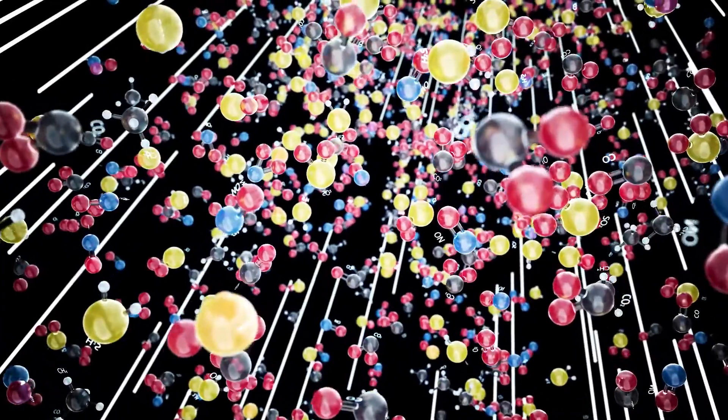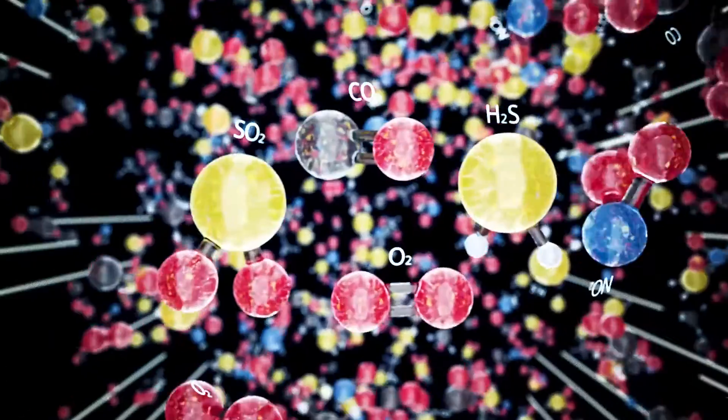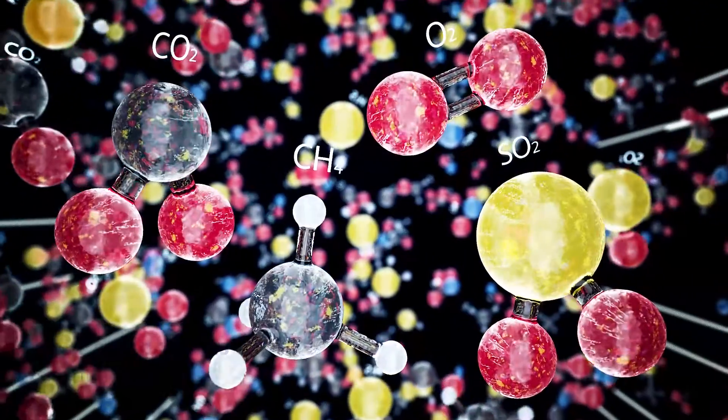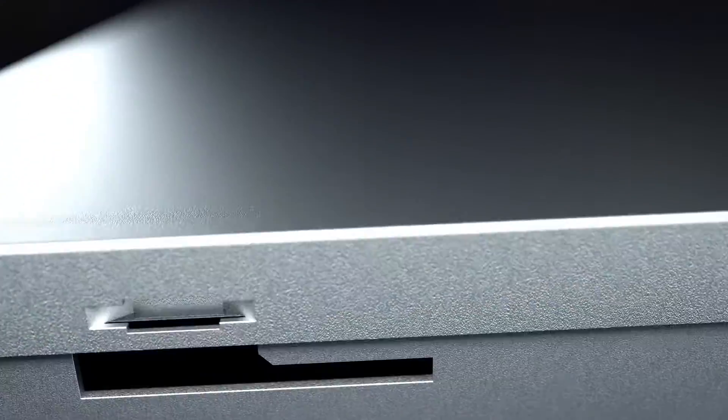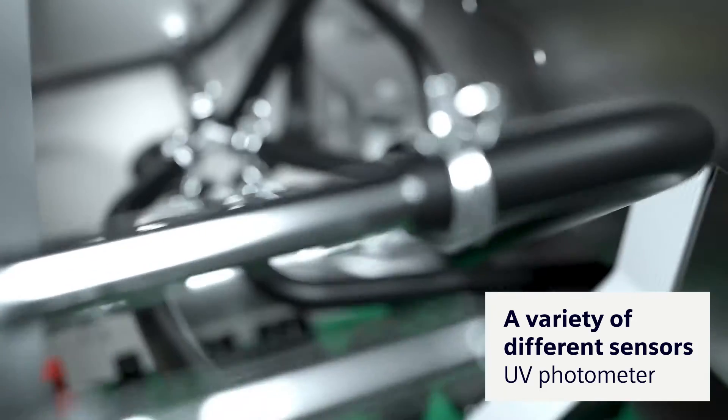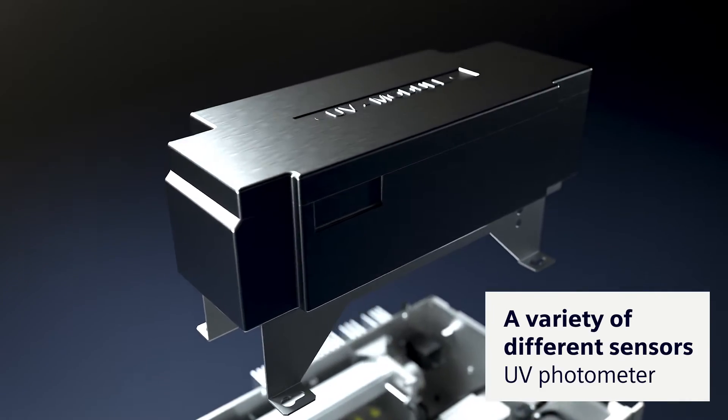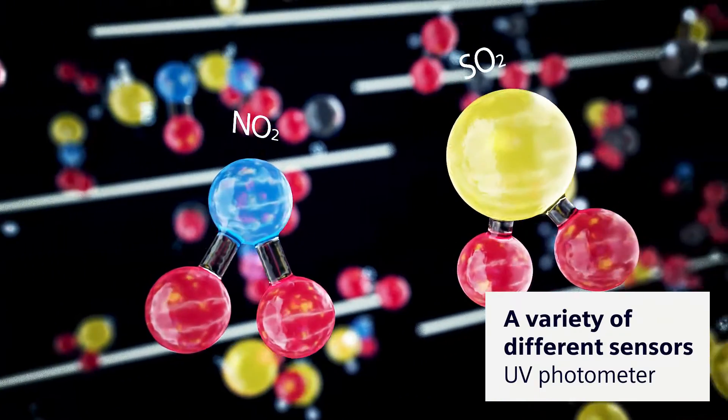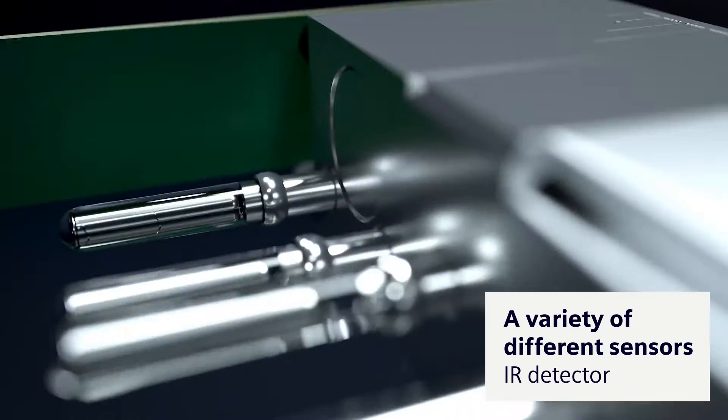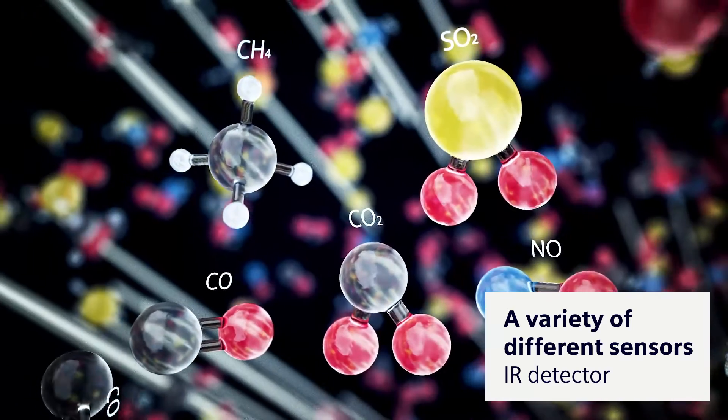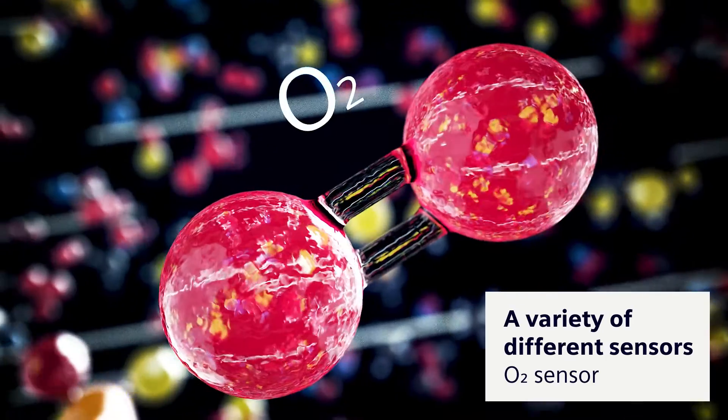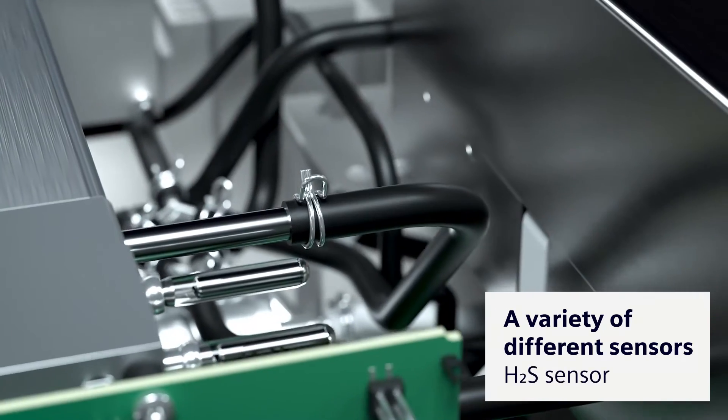The Ultramat 23 can measure 10 components, up to four simultaneously, and can be equipped with a variety of different sensors, like the UV photometer for UV active gases, the IR detector for IR active gases, the O2 sensor, or the H2S sensor.